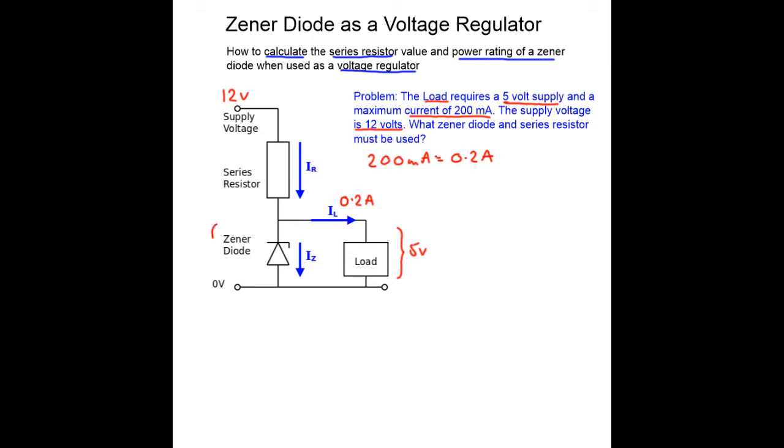Clearly the first thing that we need to do is use a 5 volt Zener diode because the Zener diode and the load are in parallel with each other. We also know that Zener diodes need a small current to make them work. In this case I'm going to assume a small current of about 10 milliamps which is 0.01 amps needed for the Zener diode itself.